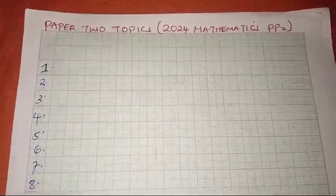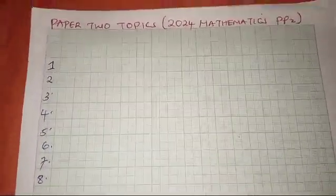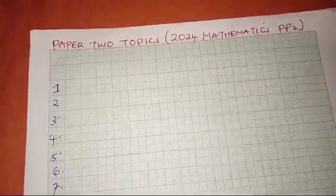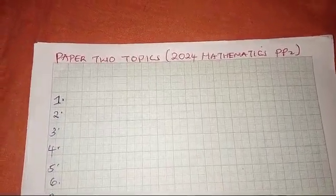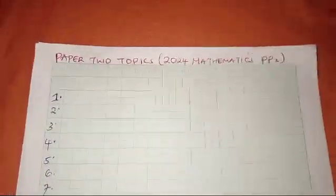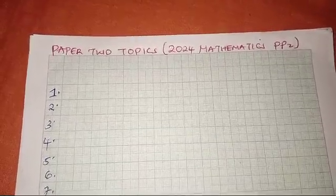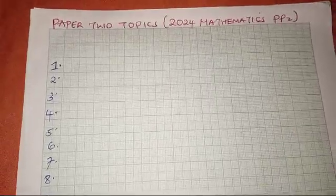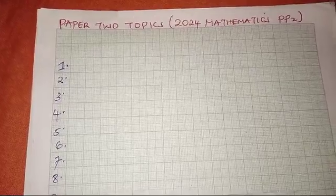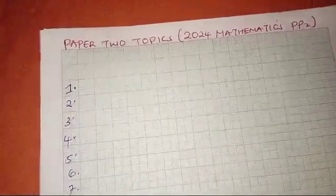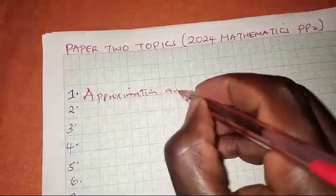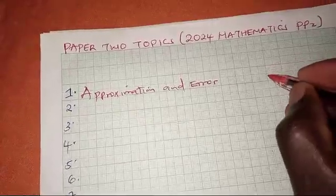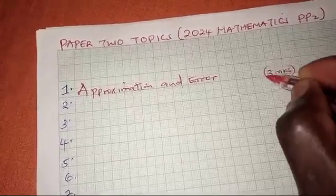I'm going to list some of the topics that I feel are going to be given a lot of weight in this year's Paper 2 mathematics exam, and I want all of us to pay attention to these topics and make sure we revise accordingly. The first topic that I feel is going to be tested is approximation and error — I feel we are going to have three marks from this topic.